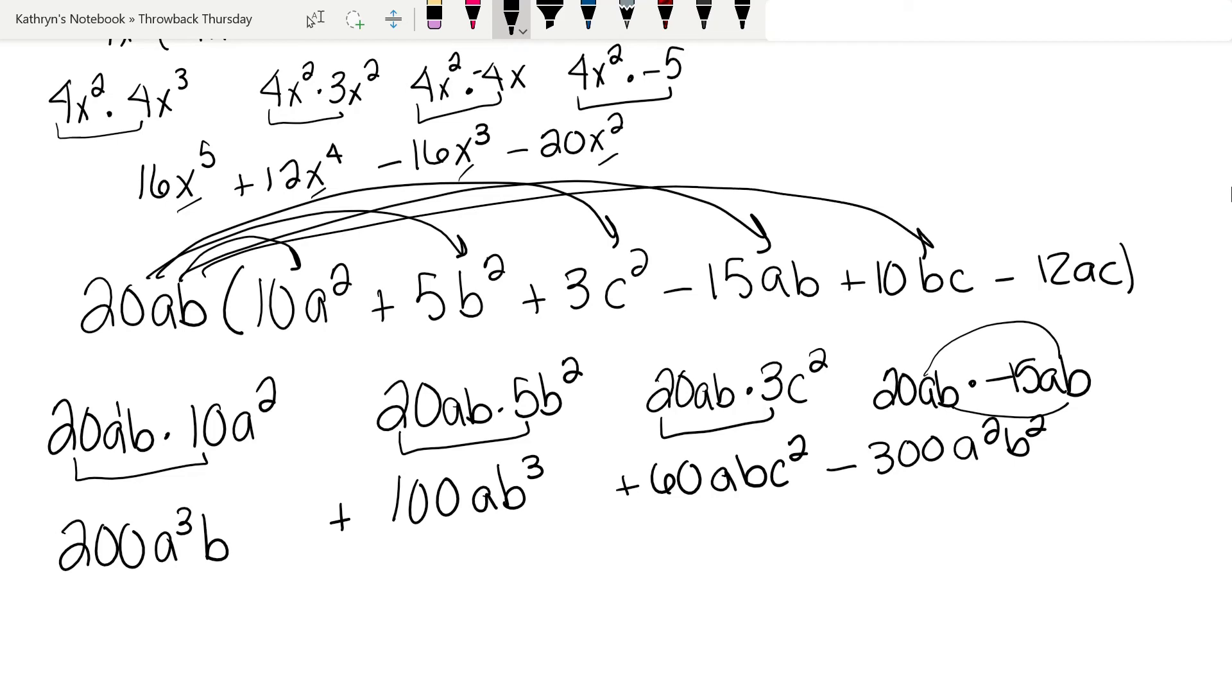And the next one, I'm running out of a little bit of room, so I'm going to write it down here. 20ab times 10bc. 20 times 10 is 200. I only have one a. I have two b's and one c.